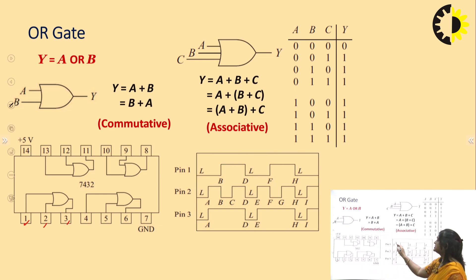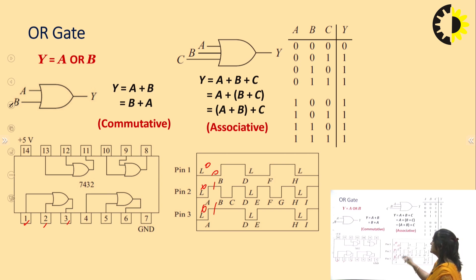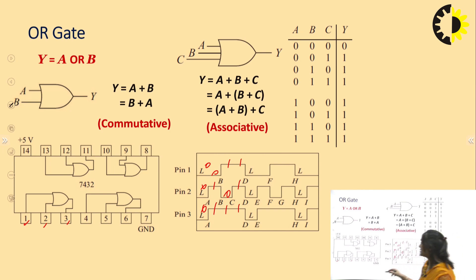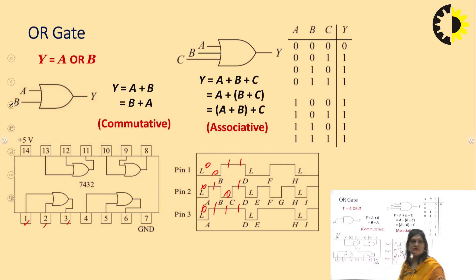In the OR gate truth table: 0,0→0; 0,1→1; 1,0→1; 1,1→1. This pin diagram is obtained from the IC.